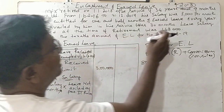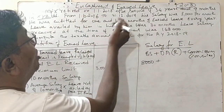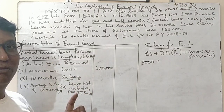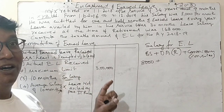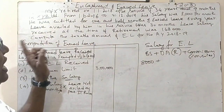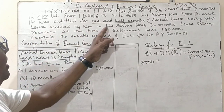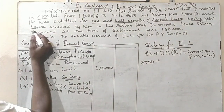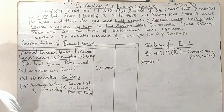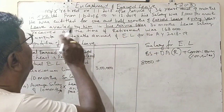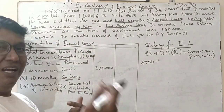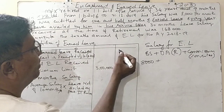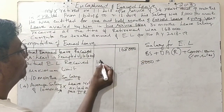He was entitled to 1.5 months of earned leave for every completed year of service. Leave availed by him during his service was 30 months — meaning 30 months of leave were already used or taken. The leave salary received at the time of retirement was 1,68,000 rupees. Let us now calculate the taxable amount of earned leave.